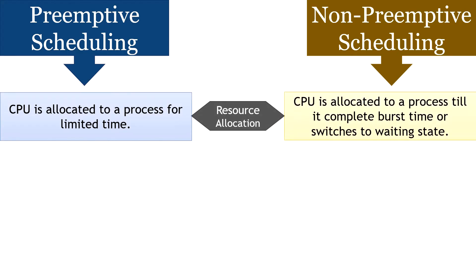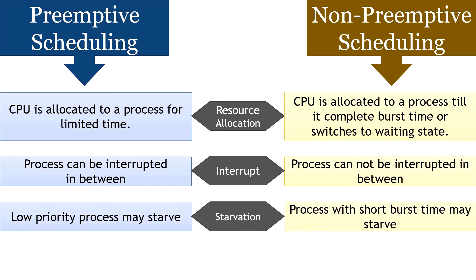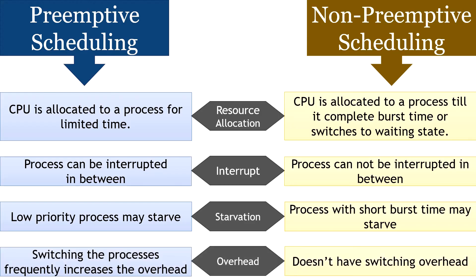In primitive scheduling, CPU is allocated to a process for a limited amount of time; in non-primitive scheduling, CPU is allocated until the process completes its burst time or enters a waiting state. In primitive scheduling, a process can be interrupted if a higher-priority process arrives in the ready queue; in non-primitive scheduling, a process cannot be interrupted even if a higher-priority process arrives. In primitive scheduling, low-priority processes may have to wait a long time or starve, while in non-primitive scheduling, processes with smaller burst time may have to wait if a longer process runs first.